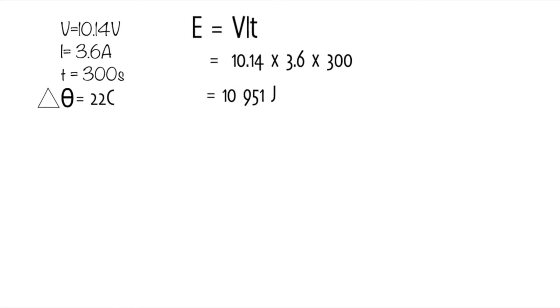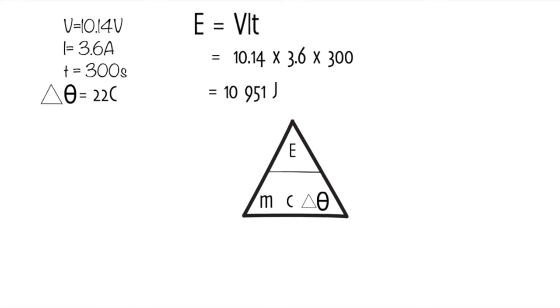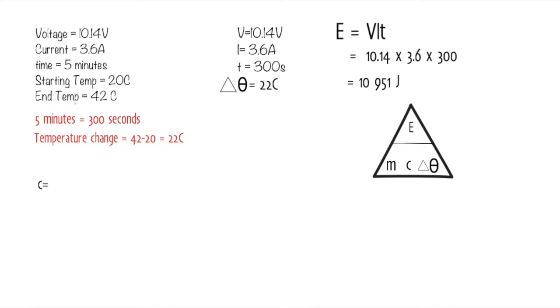We then stick the specific heat capacity formula in a triangle, so we can work out what the value for c is. So E at the top, m at the bottom, c in the middle, and delta theta - the temperature change - in the bottom right hand corner. If you cover the c, you would find that c equals E over m times delta theta. So the specific heat capacity is calculated by getting the energy, dividing it by the mass, and also dividing by the change in temperature.